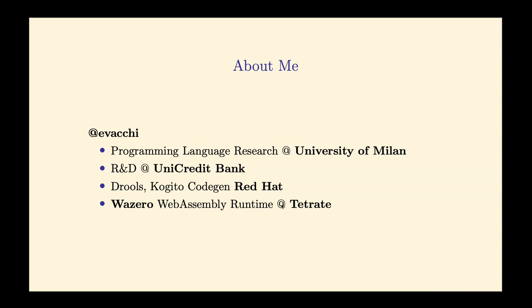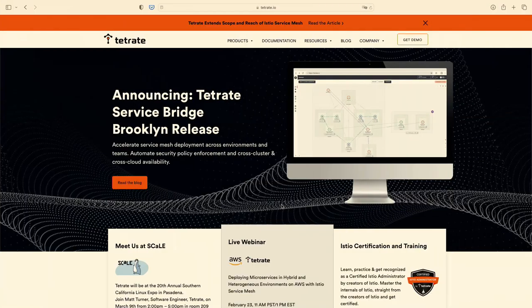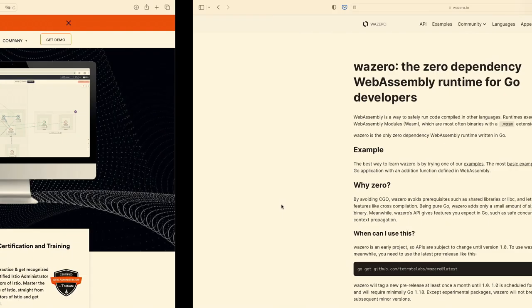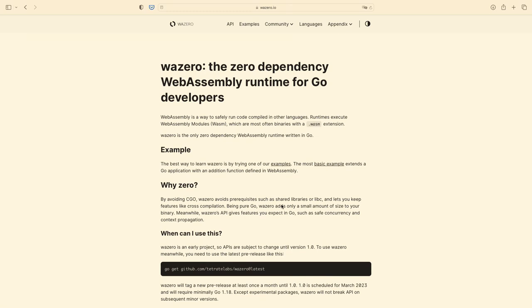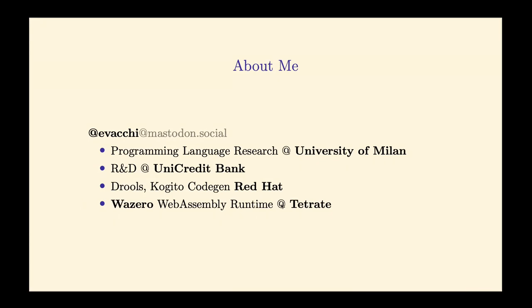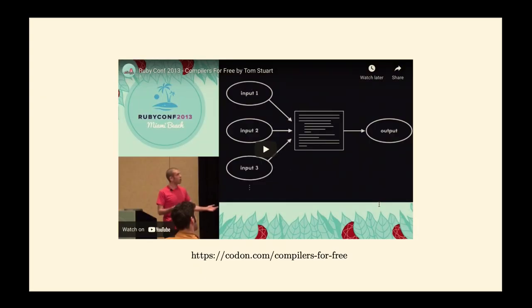A few words about me: my name is Eduardo Vacchi. I did programming language research at the University of Milan, then research and development at UniCredit Bank. I worked for five years at Red Hat on the Drools/Kogito stuff, and now I'm working at a company called Tetrate, specifically on WasmEdge, a zero-dependency WebAssembly runtime for Go developers. This talk is loosely based on a talk by Tom Stuart presented at RubyConf 2013 called 'Compilers for Free.'